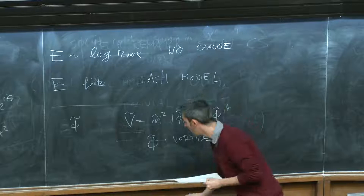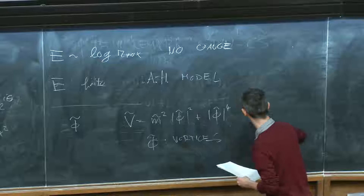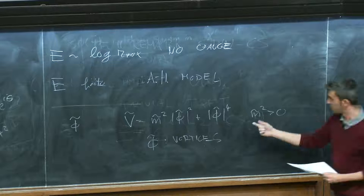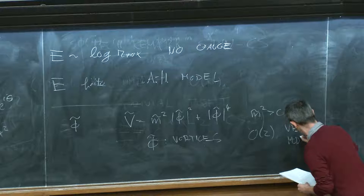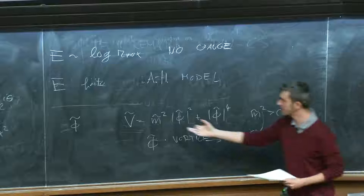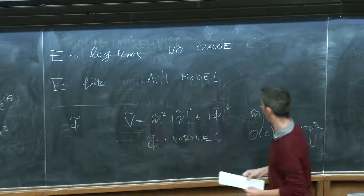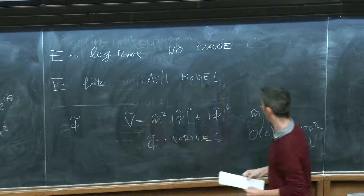The theory we write is a theory of a scalar field with some potential with a certain mass, plus a quartic interaction. This φ̃ represents the vortices — it is the creation operator for these solitons. Notice that here m̃-squared is positive, and up to that positive mass, this is precisely the O(2) vector model that was discussed earlier.